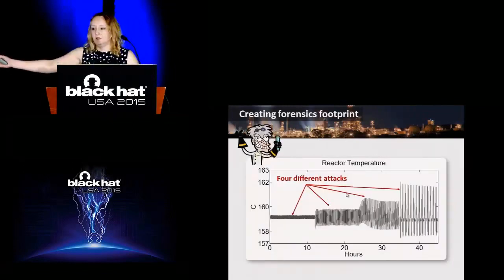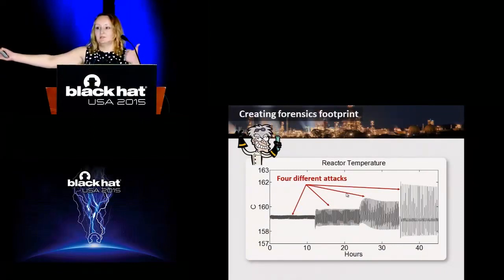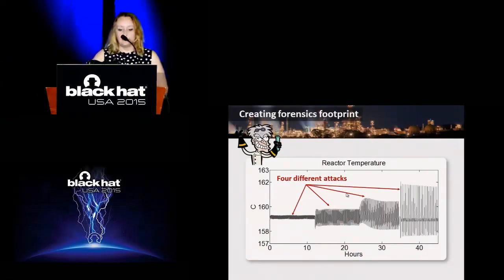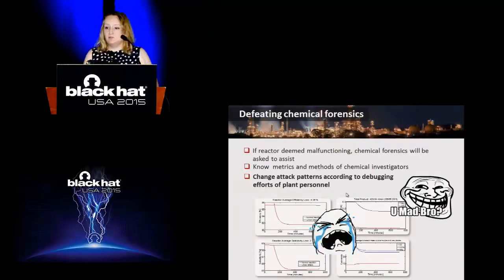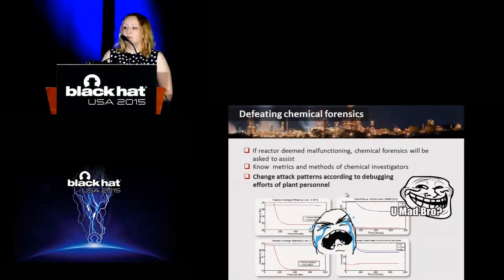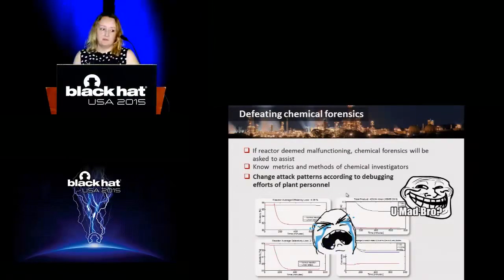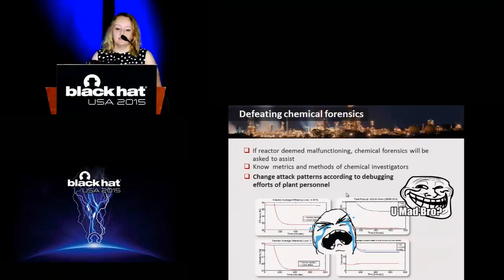This is an example: four different attacks from the damage stage which caused variation in the reactor temperature of different amplitudes. Eventually they will get tired, the reactor will be deemed malfunctioning, and the plant owners will invite a forensics team to investigate. The attacker needs to understand the metrics. Nobody can look into the reactor. Typically the reactor is tested by specific metrics calculated based on inputs and outputs parameters. The attacker needs to understand the metrics they use and change the attack patterns according to the debugging efforts of the personnel.